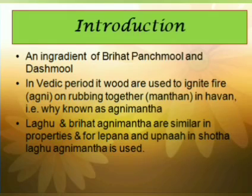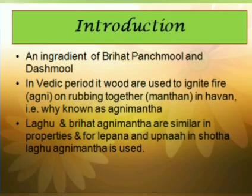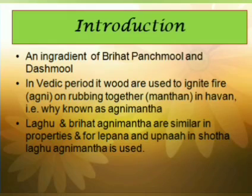There are two types of Agnimant. The first one is Lagu Agnimant, also known as Shudra Agnimant, and the other one is Brihad Agnimant. There is a controversy over the correct identity of Lagu and Brihad Agnimant. Since the Samhita Kal and Charak Samhita, two plants namely Agnimant and Tarkari are mentioned, considered as Lagu and Brihad Agnimant respectively. This controversy is resolved in the present context as Clarodendron Phlomidis is considered as Lagu Agnimant and Premna Integrifolia is considered as Brihad Agnimant.